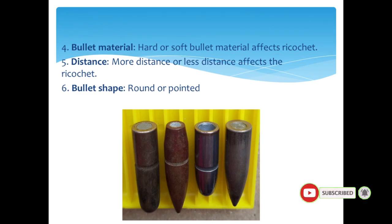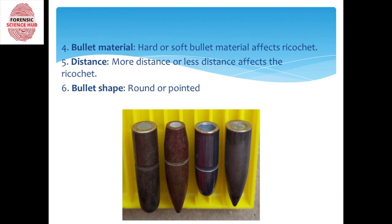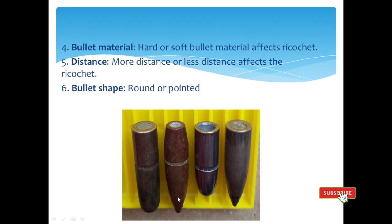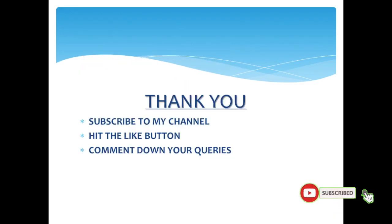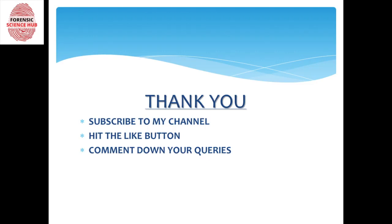Last but not least is bullet shape — a bullet can be round or pointed. As we can see in the picture, a round bullet has more tendency to ricochet off easily, whereas a pointed bullet has more tendency to enter inside the intermediate target and not ricochet. These were all the factors that affect ricochet. Thank you for watching.